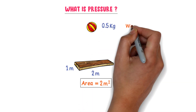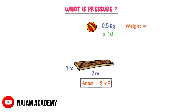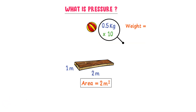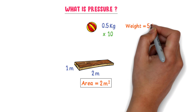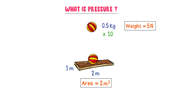Can you calculate the weight of this ball? Well, the easy trick to calculate its weight is multiplying its mass by 10. So 0.5 into 10 is equal to 5 Newton. The weight of this ball is 5 Newton. We know that weight is the downward force of any object. Now this ball falls and hits the wooden sheet, so we say that a collision occurs between the ball and the wooden sheet.